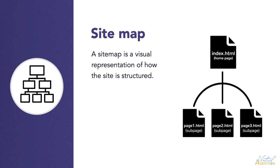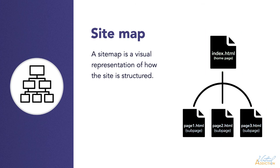Another way of looking at your website is to view it as a site map — a visual representation of how the site is structured. This is a very simple site map showing that the index page, the homepage, is linking out to all of the subpages. Site maps can get quite extensive depending on the size of the website, and they are great components of architecture that can help when designing and developing a website, aiding in knowing how the user can navigate from page to page.